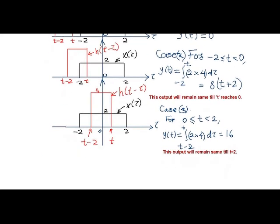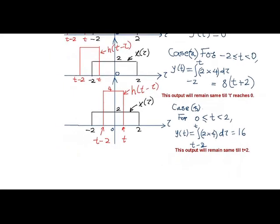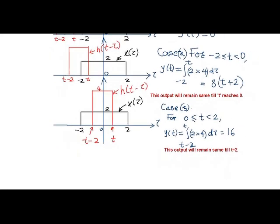The output of convolution is 16 after substituting these integral limits. So this output will remain same till small t slides and reaches up to 2.